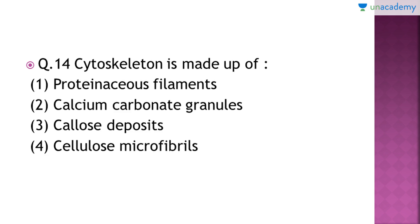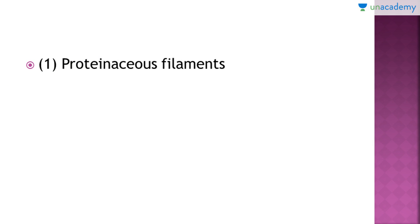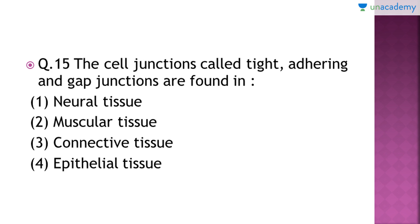Question number 14: 'Cytoskeleton is made up of which of the following?' The right answer is option number 1 — proteinaceous filaments. The function of the cytoskeleton is to provide support to the cell. These proteinaceous filaments spread through the protoplasm and keep the cell's shape intact.